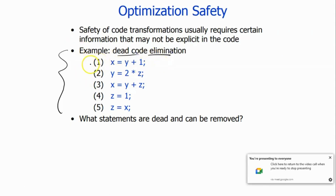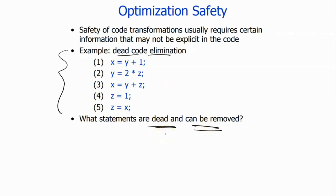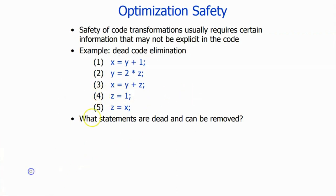Let's take this example. This is the code given to you — five instructions are there. What statements are dead and can be removed? Just by looking at this program, can you say that some instruction is dead code — that this instruction can be removed without any worry? The first and fourth instructions actually can be removed without any worry.